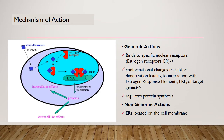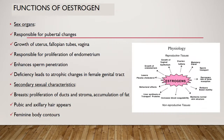Like all steroid hormones, estrogen is responsible for normal sexual maturation and growth of females. It stimulates the development of the vagina, uterus, fallopian tubes, and secondary sexual characteristics. It is responsible for the proliferation of the endometrial lining as well as enhancing sperm penetration. It stimulates stromal and ductal development in the breast, axillary and pubic hair, as well as the typical feminine body contour.